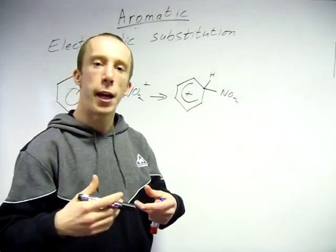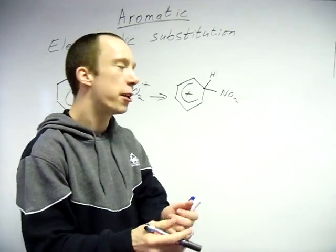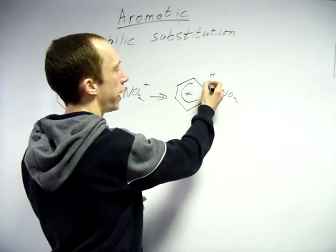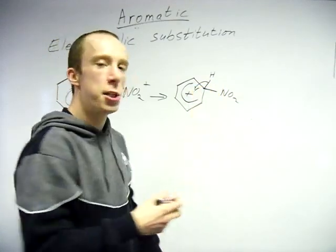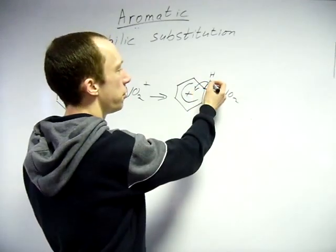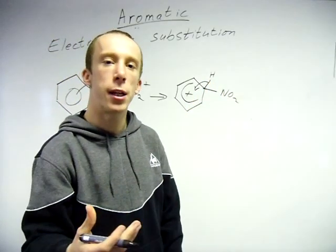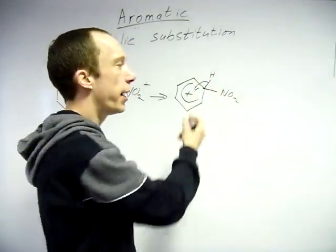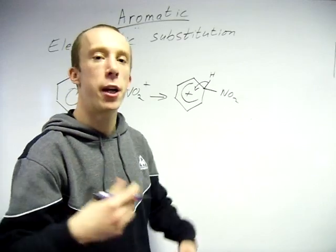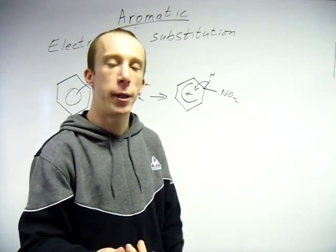From here we need to reform that ring, so we want to kick something off to get some electrons back to complete that ring structure again. What happens is poor little hydrogen here, he's kicked off. The electrons, remember, start at the bond. It's where the electrons are. They come in and they reform the ring structure to complete, to get the aromatic stability back.